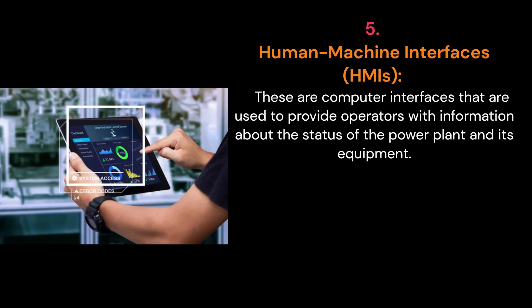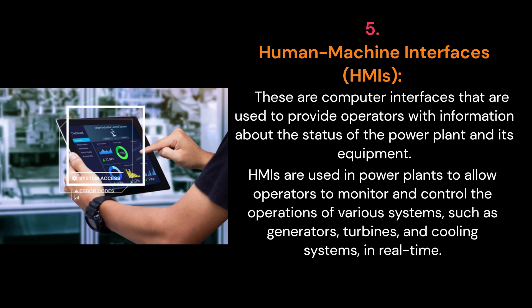5. Human Machine Interfaces, HMIs. These are computer interfaces that are used to provide operators with information about the status of the power plant and its equipment. HMIs are used in power plants to allow operators to monitor and control the operations of various systems, such as generators, turbines, and cooling systems, in real time.